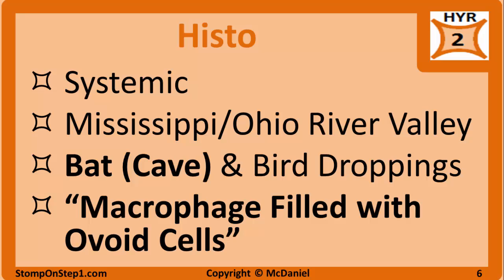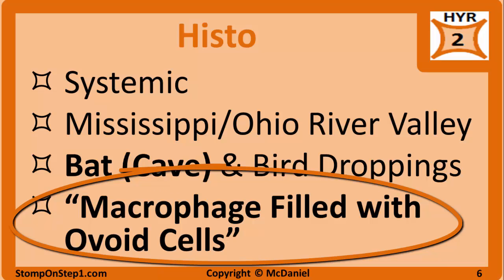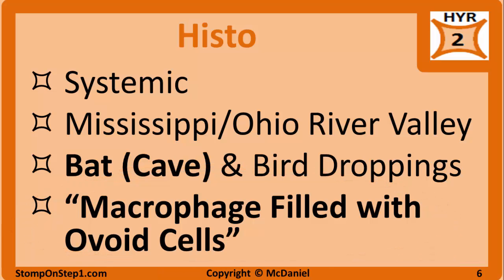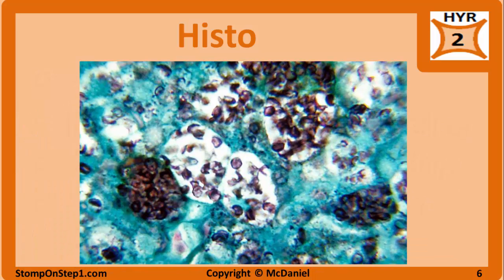Histoplasmosis is another systemic mycosis, found primarily in the Mississippi and Ohio River Valley. Histoplasmosis questions may mention the patient being in caves or cleaning bird cages, as it can be found in soil contaminated with bat or bird droppings. On histology, you find macrophages filled with many ovoid cells, since this fungus is intracellular.